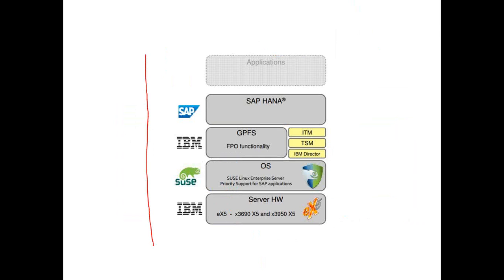This is the complete technical architecture. We purchase SAP HANA hardware from IBM (different series like x5, x6) based on the size — small, medium, or large. Then we purchase SUSE Linux Enterprise Server (and now Red Hat too). IBM provides a file system called GPFS (General Parallel File System) for faster access. Then we purchase SAP HANA software from SAP, and on top of that we run SAP applications.